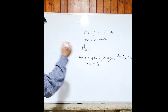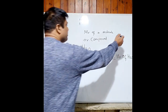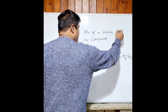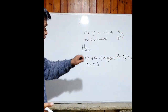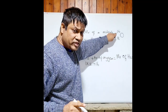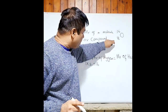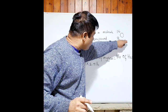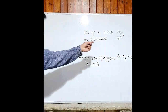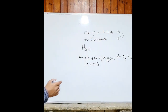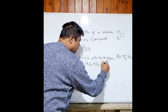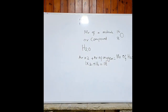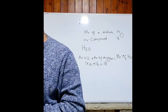When you look at the periodic table, oxygen has two numbers: 8 and 16. The smaller number indicates the number of protons, which equals the number of electrons. AR is the atomic mass — always take the bigger number. So: 1 times 2 plus 16 equals 18. That's the Mr of water.